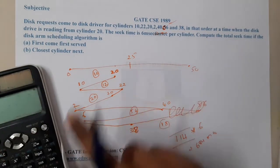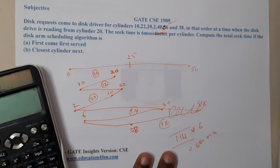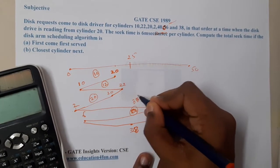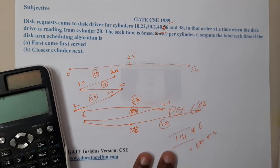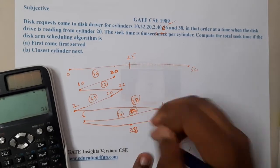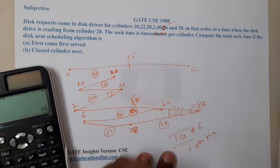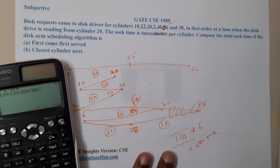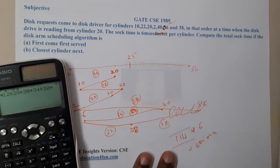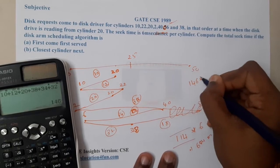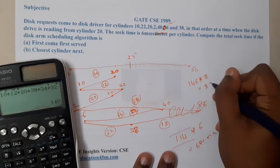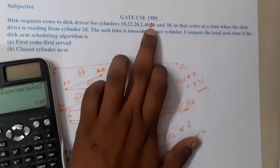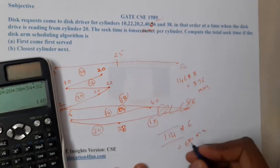Let us recalculate with the corrected value of 06. From 2 to 40 is 38, from 40 to 6 is 34, and from 38 to 6 is 32. So the total is: 10 + 12 + 20 + 38 + 34 + 32 = 146. So 146 into 6 is 876 milliseconds, which matches the answer in the book.